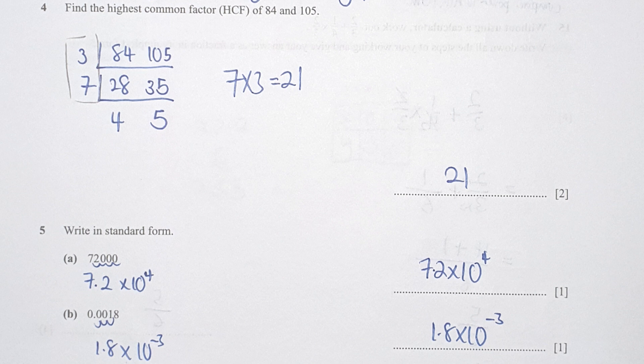Question 5: writing it in standard form, 72,000 can be written as 7.2 times 10 to the power of 4 because it was shifted to the left by 4 times. For section b, it can be written as 1.8 times 10 to the power of negative 3 because I shifted it towards the right by 3 steps.